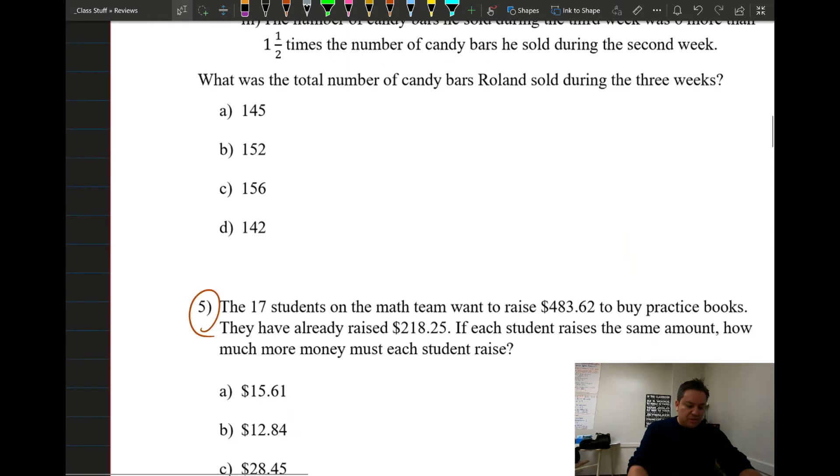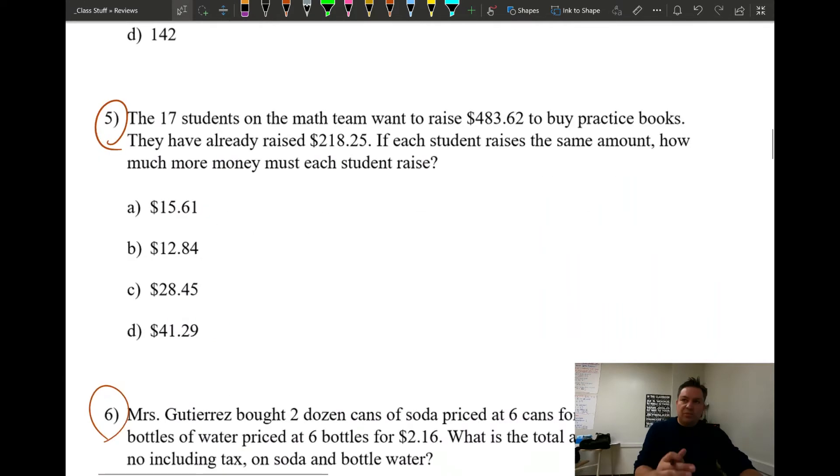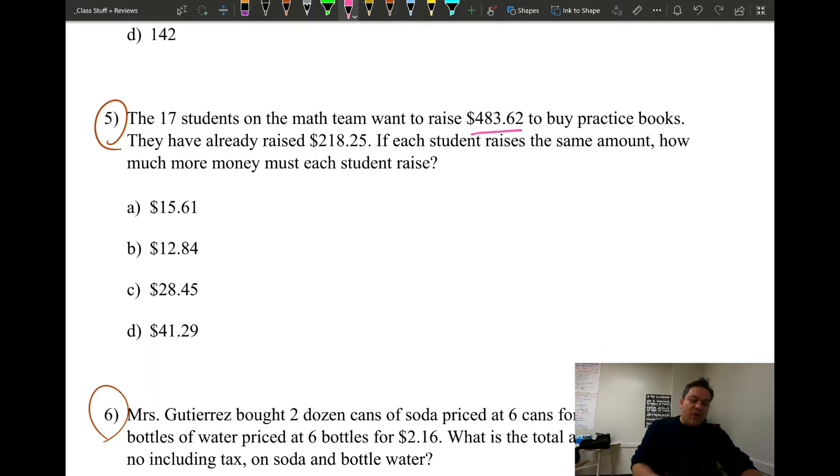Now let's try another one. I said we were gonna do numbers. Let's see, number five. These are higher level thinking because we have more than one operation going on, so we got to pay attention, stay on track. This one says the 17 students on the math team want to raise $483.62 to buy practice books. They have already raised this much. Now the question is, if each student raises the same amount, how much do they need to raise in order to come up with this amount? This is what we're looking for right there.